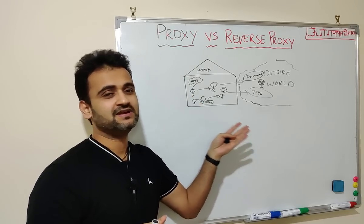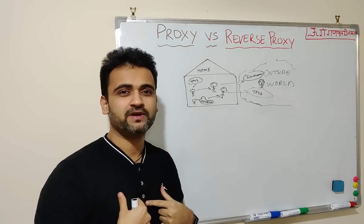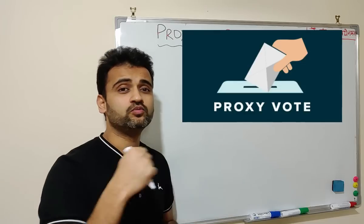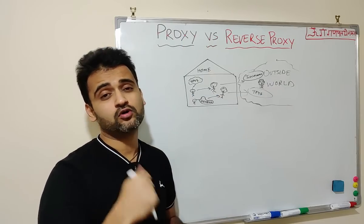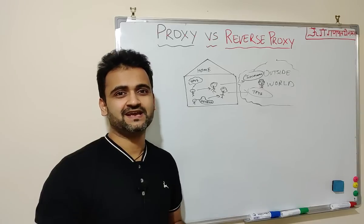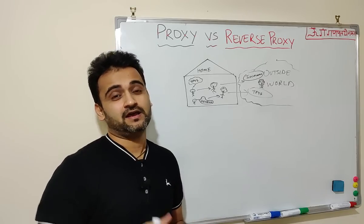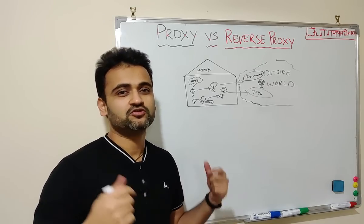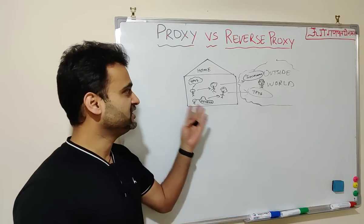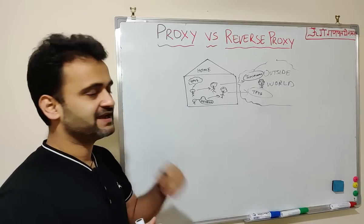Just correlate that easy example with a proxy server. What is a proxy? Proxy is an act which someone else does on your behalf. In the United Kingdom there is a concept called proxy voting — if you are not able to vote yourself, someone else can vote on your behalf. Even in colleges, students used to do proxy attendance. All these examples explain how a proxy works. Proxy is an interface between you and the outside world.